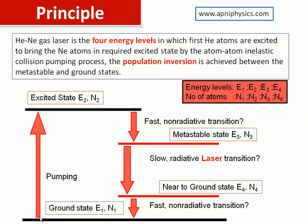The ground state is the lowest state of the atom and the excited state is above it. All states in between the ground state and excited state are known as meta-stable states. The lifetime of the meta-stable state is higher compared to the excited state. The lifetime of the excited state is about 10⁻⁸ seconds, and the lifetime of the meta-stable state is about 10⁻³ seconds — a difference of about 5 orders of magnitude.